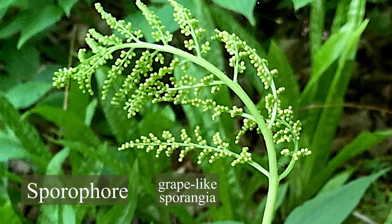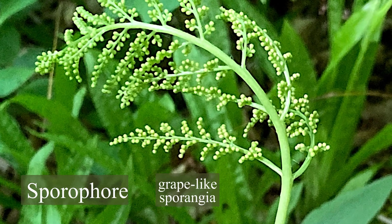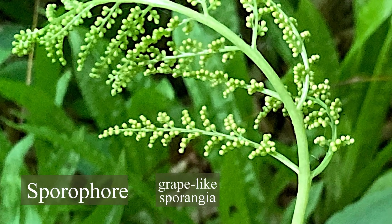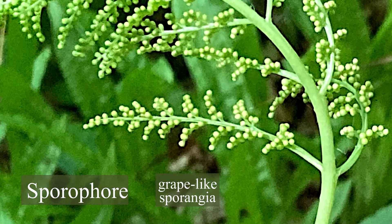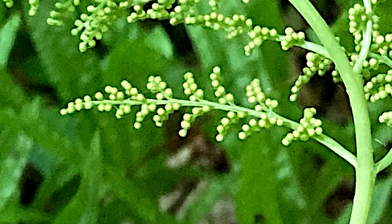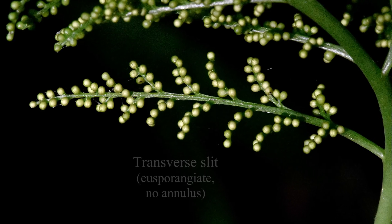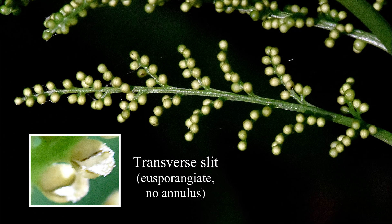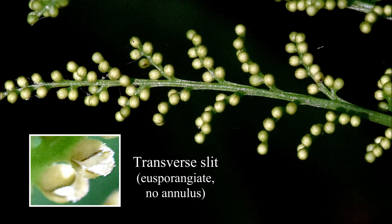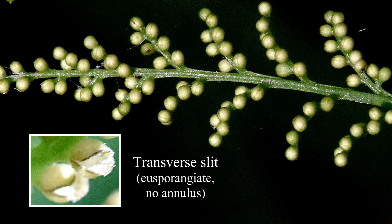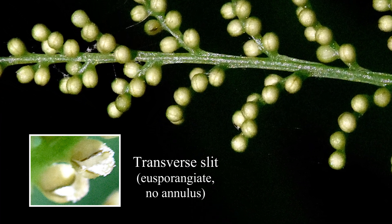The sporophore's large sporangia reveal its eusporangiate nature — no small fruit dots under the frond here. Mature sporangia open by a slit, Pac-Man-like.